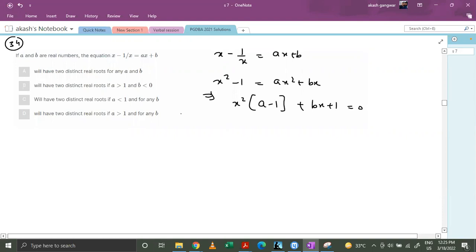Now for distinct and real roots, d should be greater than 0. So basically b square minus 4 times (a minus 1) should be greater than 0. Now this term is always greater than equals to 0. b square is always greater than equals to 0. Now let's look at this term.